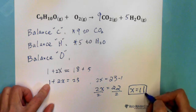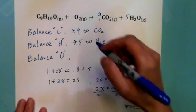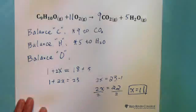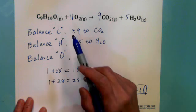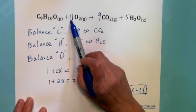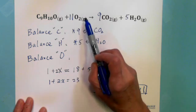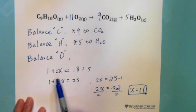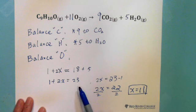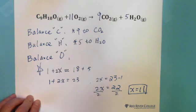So X equals 11. Double check: before the reaction, one plus eleven times two is one plus 22 equals 23 oxygen. After the reaction, 23 oxygen — balanced. Remember this method.